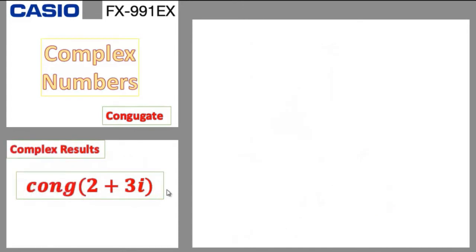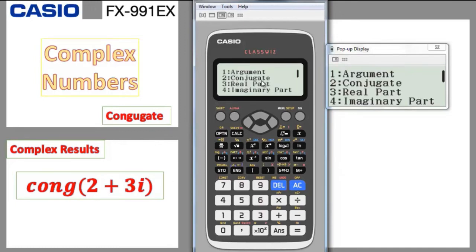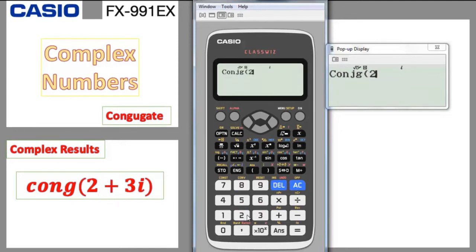Now the conjugate — it's easy but sometimes we forget. To find the conjugate, remember the calculator must be in menu 2, the complex mode. If the calculator is in menu 1 (normal mode) and you write 2 plus 3i, pressing ENG gives nothing. In complex mode, go to option, conjugate is number 2. Press 2, write the complex number 2 plus 3i, close bracket, press equal — the imaginary part switches sign. So the conjugate of 2 plus 3i is 2 minus 3i.